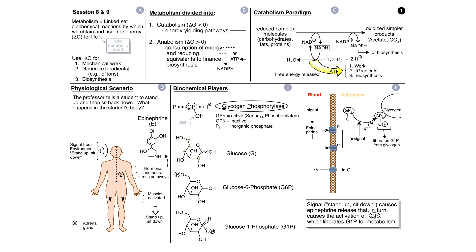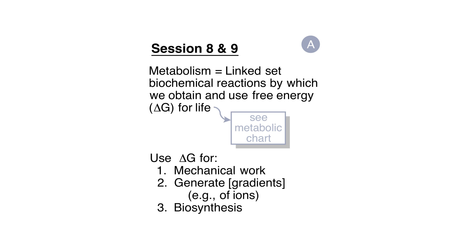With that introduction, let's turn to my lecture notes, presented in the format of storyboards. In storyboard one, panel A, I give the definition of metabolism as the linked set of biochemical reactions by which we obtain and use free energy — that is, delta G — for life. We use that free energy for three main areas: to do mechanical work, to generate concentration gradients, and for biosynthesis.